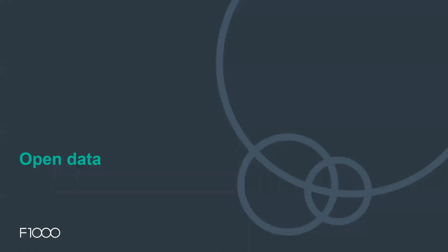Moving on to open data, which I think was where a lot of the questions stemmed from for this webinar. We have quite rigorous open data policies — we cannot publish any articles that do not contain clear data availability statements. This comes up in our initial checks to make sure that we can move the article through pre-publication checks and publication. I'm going to give you more information on what we mean by open data, what our requirements are, and give you some examples of data availability statements.